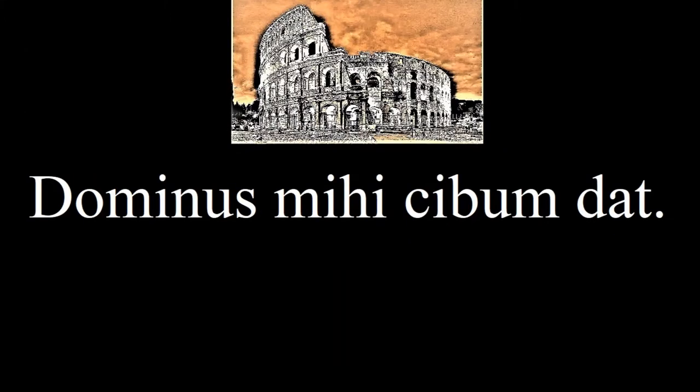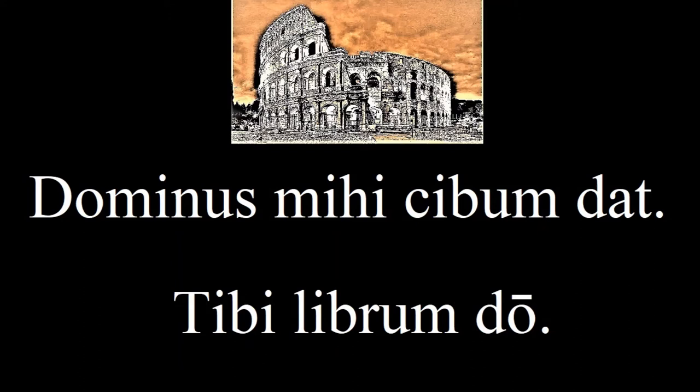Look at the next sentence: 'Dominus mihi kibum dat.' The first word obviously has a connection with 'dominate' and has meanings like master or lord. And you may have guessed that the second word is the pronoun meaning 'to me.' So this sentence means 'the master gives food to me.' And this sentence: 'Tibi libram do' — I give the book to you. They're only connected by one letter, but 'tibi' is the dative form of 'tu.'